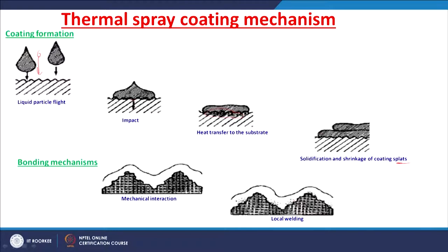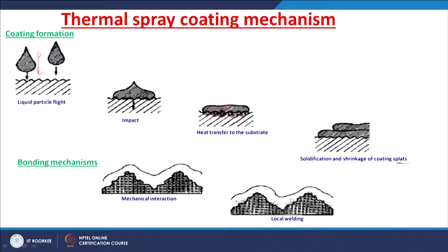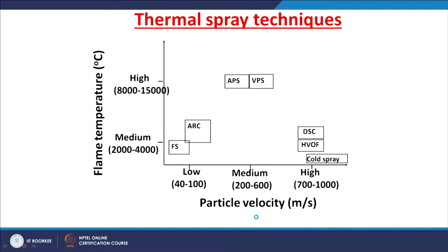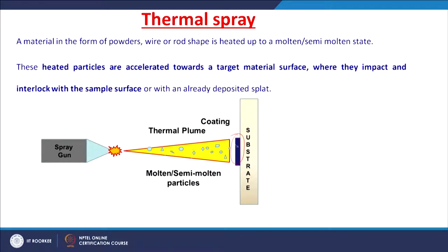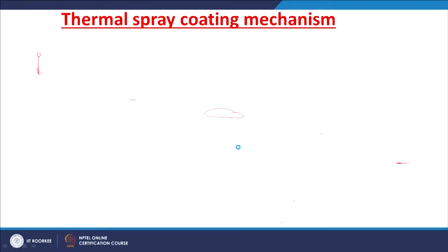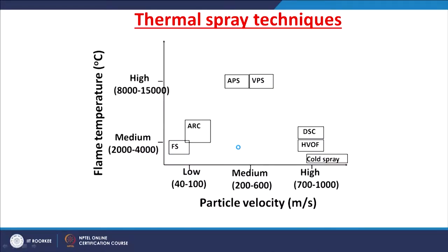The bonding mechanisms involve the impinging of particles in a molten or semi-molten state. Once they impinge, they interlock with each other and form a coat. They are strong enough because of mechanical interaction and local welding. Based on the temperature developed within the flame or the acceleration given to these particles, there are several thermal spray techniques.